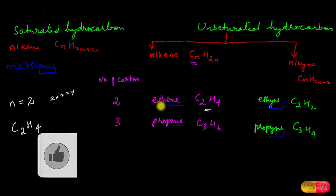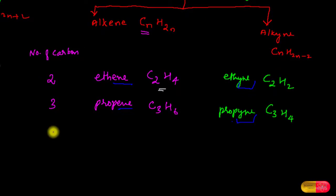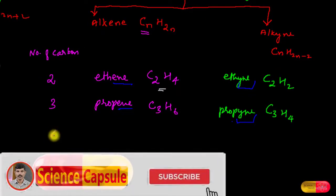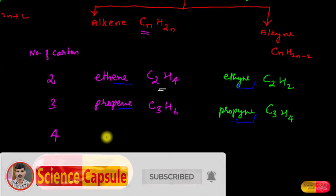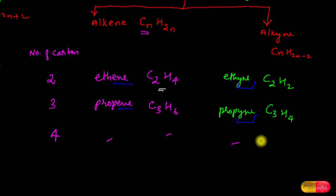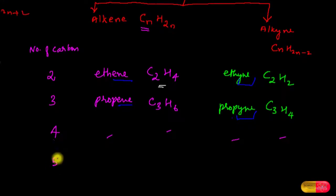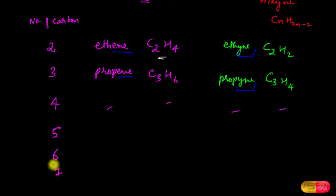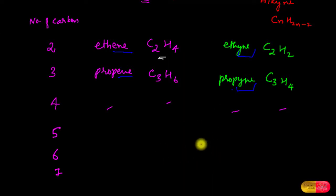For practice, find the names and molecular formulas for alkene and alkyne members with 4, 5, 6, and 7 carbon atoms. If you find it difficult, mention it in the comment section and I will provide the answers. This is all about saturated and unsaturated hydrocarbons.